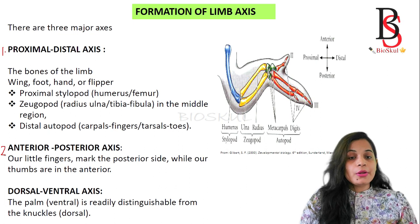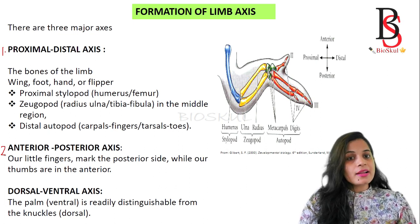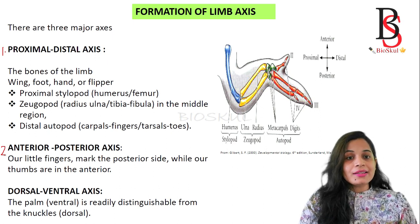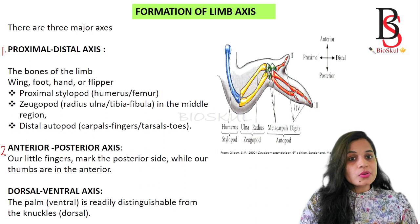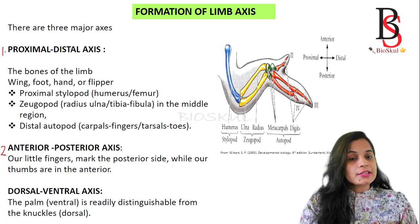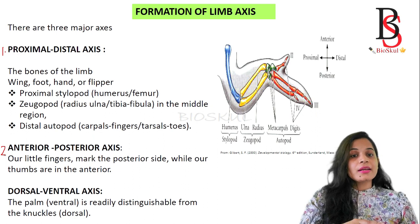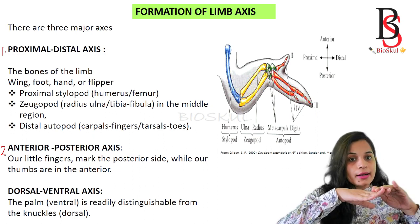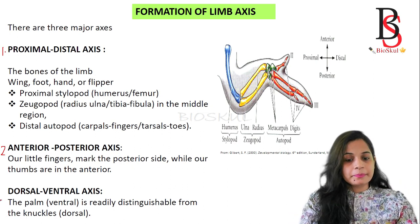I have videos on the generation of the proximal-distal limb axis as well as on the anterior-posterior axis — you will find the links in my description box. Today we are going to discuss the dorsal-ventral limb axis formation in tetrapods, where the dorsal axis is marked by the knuckles and the ventral axis is marked by the palm.